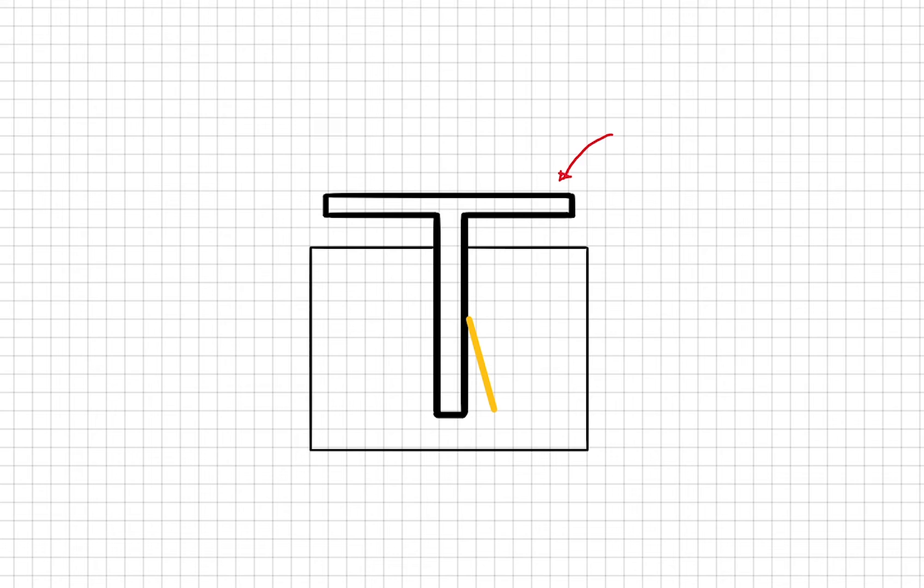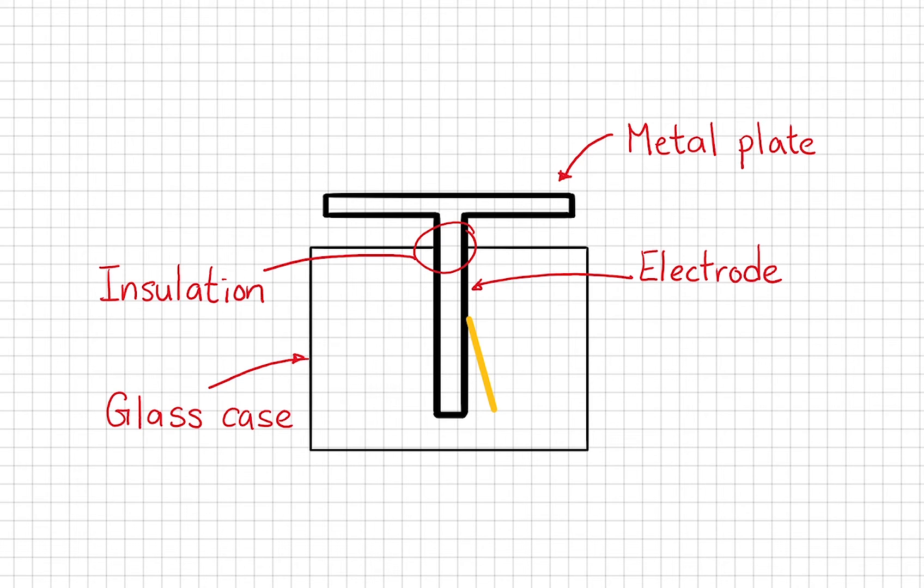Here's an electroscope. At the top, there's a metal plate that connects to a metal rod, which we can call the electrode. There is also some insulating material between the electrode and the glass casing, but I'm going to leave that out of the diagram to keep it simple.